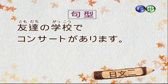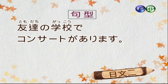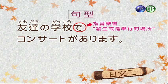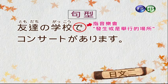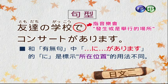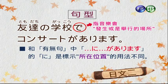友達の学校でコンサートがあります（在朋友的學校裡有音樂會）。這裡我們要學習的是這個句子裡面的助詞で，是指音樂會發生或舉行的場所。それはこれが以前學過的場所に動詞があります的このにが標示東西所在位置的用法是不相同的，因為で有表示動態的意思，有發生或舉行舉辦的用法。